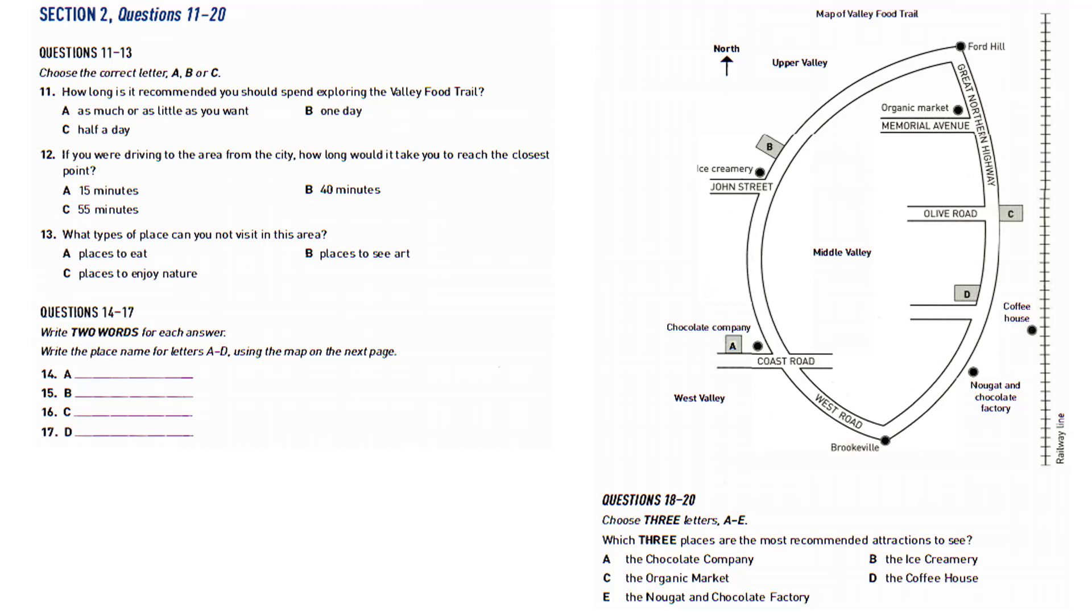Now answer questions 14 to 20. But let's go back to food. If we begin in Brookville and head north towards Upper Valley in a clockwise direction, passing West Valley on West Road, we cross over Coast Road to come to our first place of interest, Magic Coffee. This is not to be confused with the coffee house, situated opposite on the other side of the valley on the railway line. Magic Coffee is next to the Chocolate Company, which is on the corner. Just past the ice cream shop on the corner of John Street is the Fresh Produce Shop.